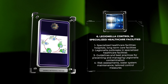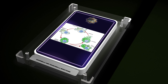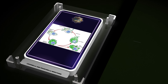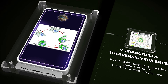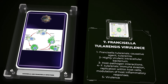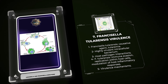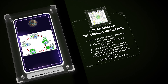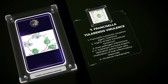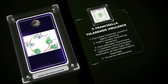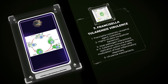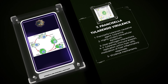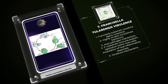Specialized healthcare facilities, such as hospitals and long-term care facilities, pose unique challenges in controlling Legionella outbreaks. This section provides comprehensive guidelines and best practices for preventing and managing Legionella contamination in these settings. We will explore the importance of risk assessments, water system maintenance, and implementation of tailored control measures, as well as the role of surveillance strategies and outbreak investigations in mitigating the impact of Legionella outbreaks within specialized healthcare facilities.